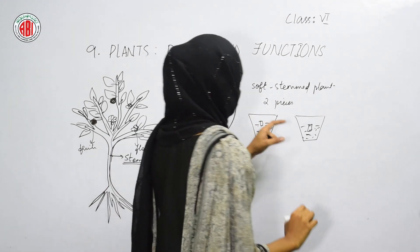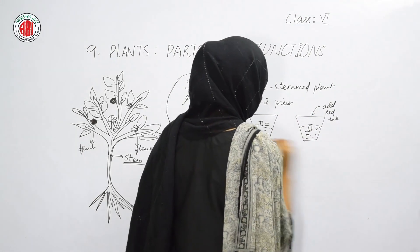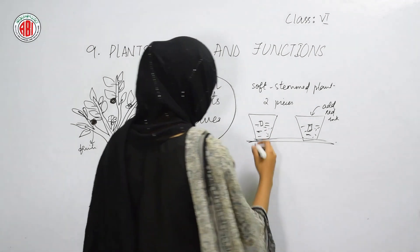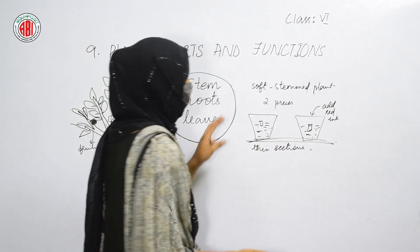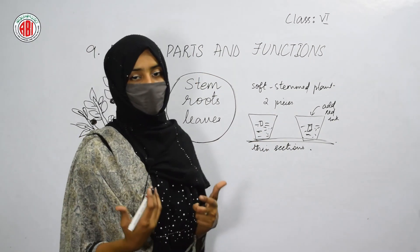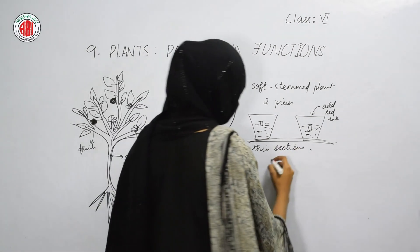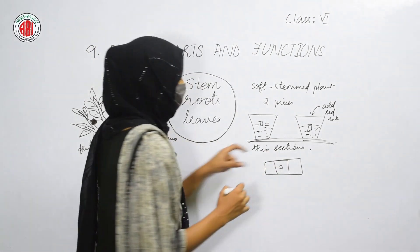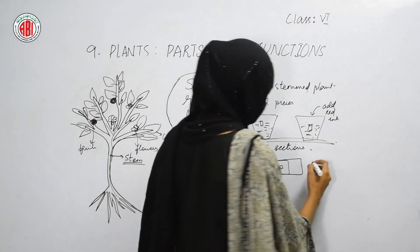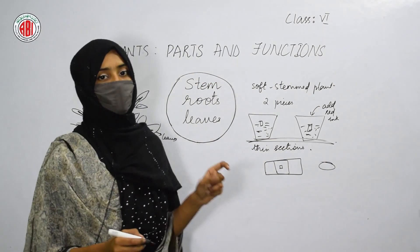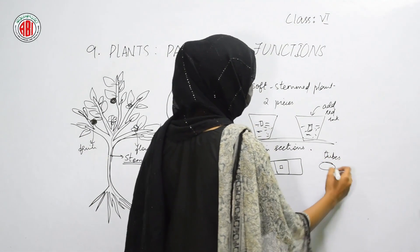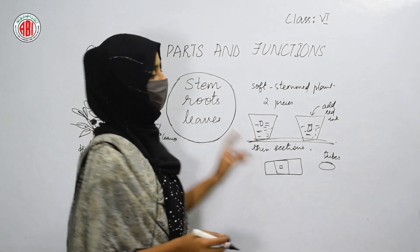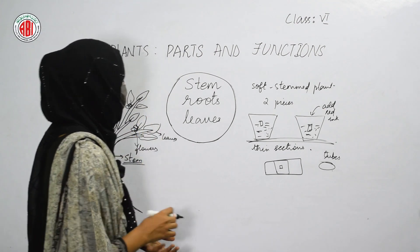Take two tumblers with water, place one piece of stem in each, and add red ink to one tumbler. Leave this arrangement for a few hours. Then take out the stems and cut them into thin sections. Observe a thin section from the tumbler with red ink under the microscope. We can find ring-like structures that act like tubes and carry water from the roots to different parts of the plant, demonstrating how transportation occurs through the stem.